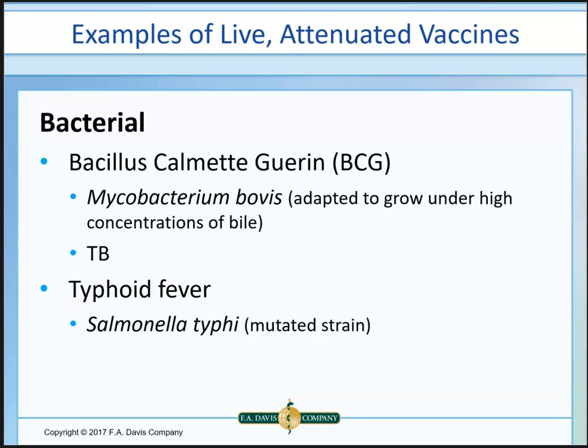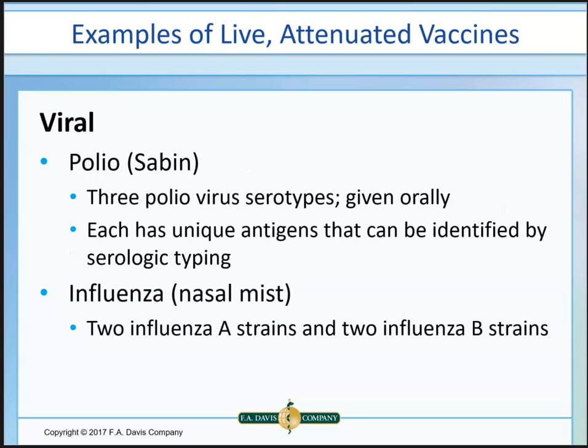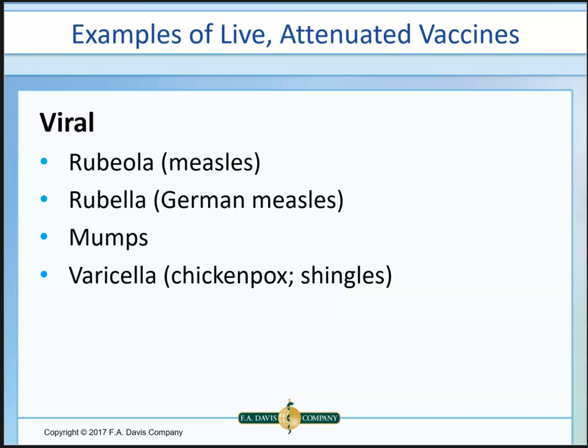The Sabin oral polio vaccine covered three polio virus genotypes, each identified by a serological type. It was once given on a sugar cube. For influenza, there's now a nasal mist spray covering strains of influenza A and B. Other examples of live attenuated viral vaccines include rubella (measles), rubella (German measles), mumps, and varicella — which covers both chicken pox and shingles as two separate vaccine types.